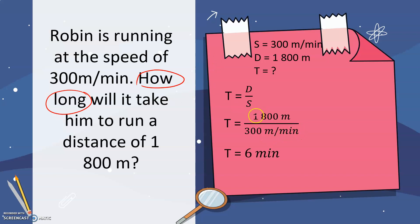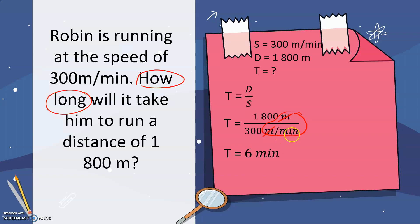Dividing 1,800 by 300 gives us 6. To determine the unit of measurement, we look at the units: meters over meters per minute. Since the meters are the same, we can cancel them out, leaving us with the unit minutes. Therefore, it will take Robin 6 minutes.